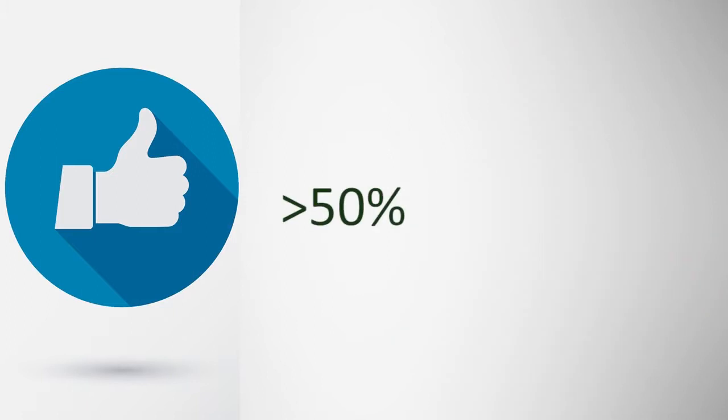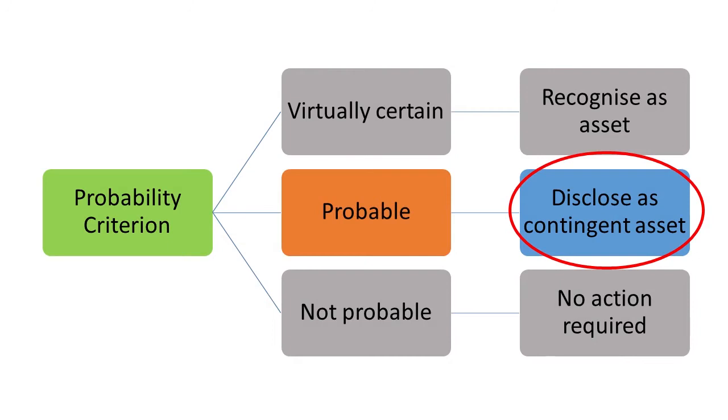As a general rule of thumb, the flow of economic benefits that are greater than 50% is considered probable. Thus, in terms of IAS 37 paragraph 34, the compensation from the lawsuit against the competitor should be disclosed in the accounting records at year-end.